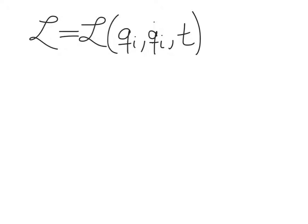Recall that the Lagrangian is defined so that it's a function of the generalized position variables qi and the generalized velocities qi dot. There can also be time dependence, although we'll consider a case where there is no time dependence.